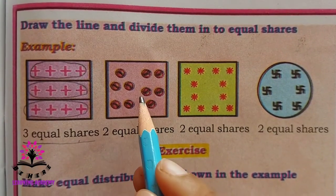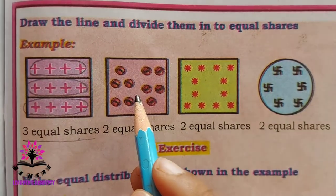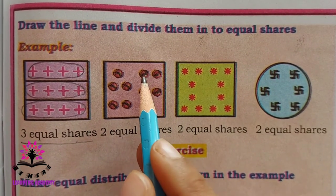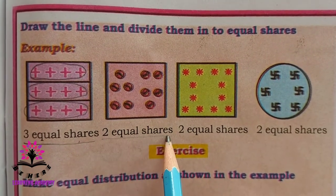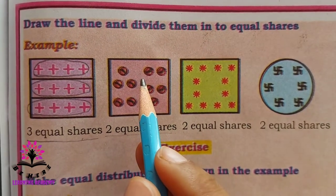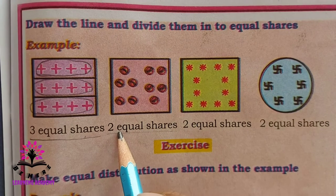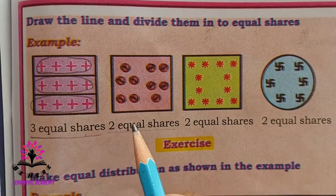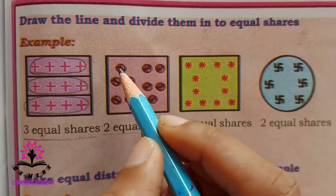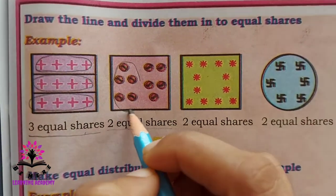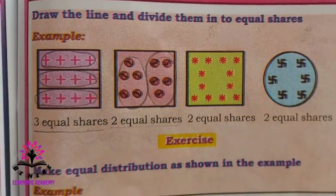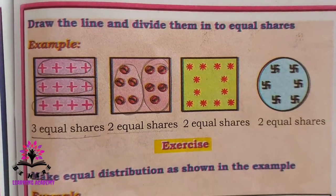You see balls — how many balls are there? Let us count: one, two, three, four, five, six, seven, eight, nine, ten. You have to make two equal shares. When you divide ten by two, how many balls will come in one group? Five, isn't it? So one, two, three, four, five — this is the first group and this is the second group. Ten balls are divided into two equal shares.